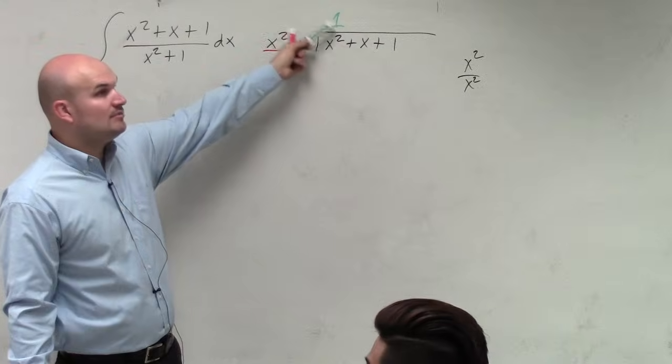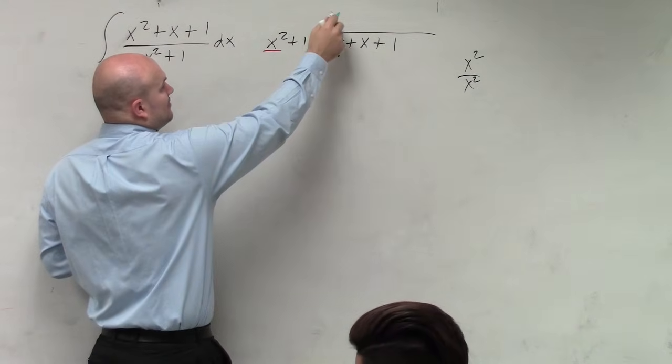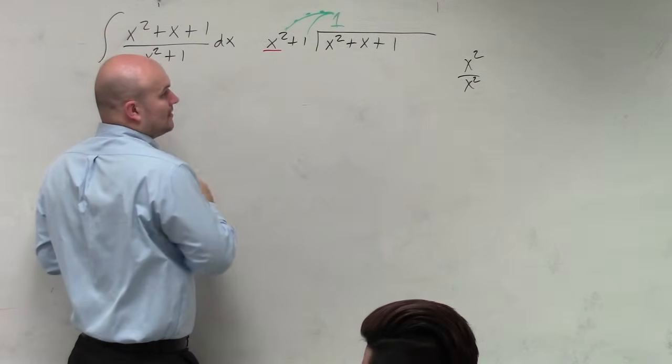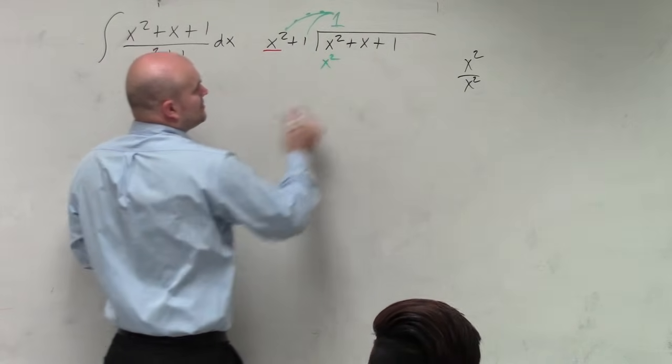But then what we need to do is we need to multiply that back over. So you've got to multiply this 1 times the x squared and the 1. So 1 times x squared is x squared. 1 times 1 is 1.